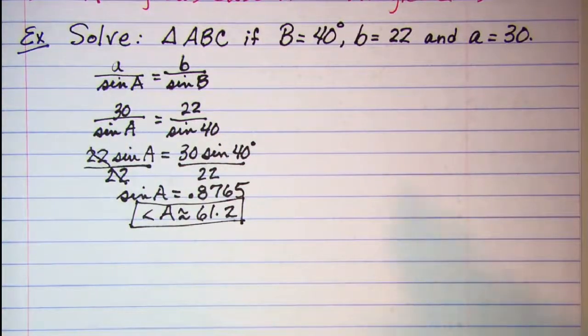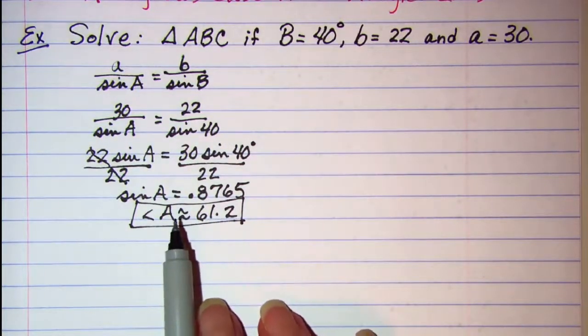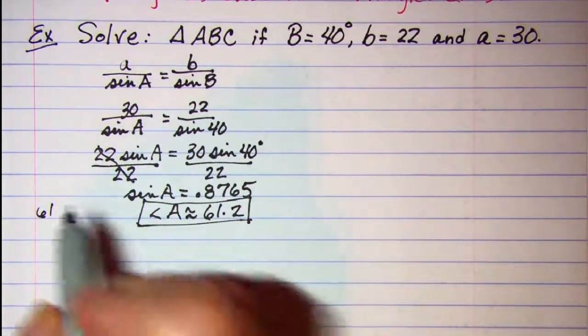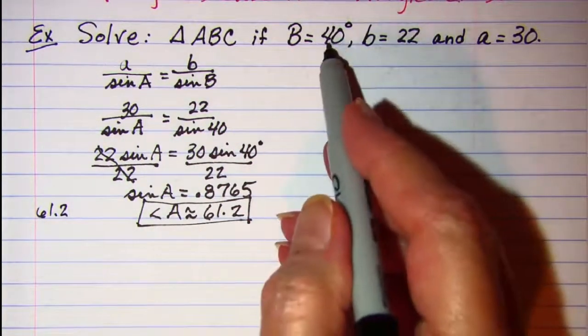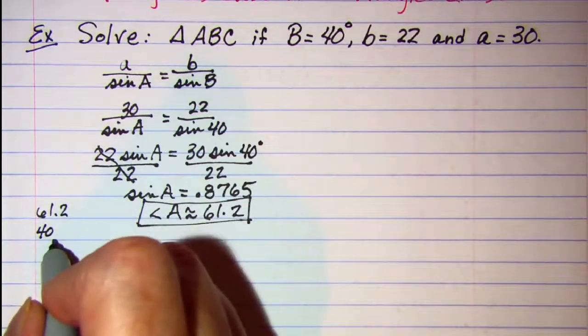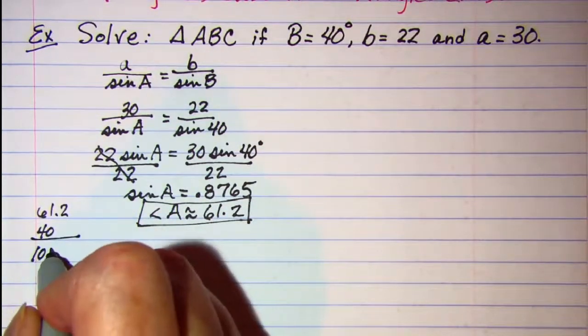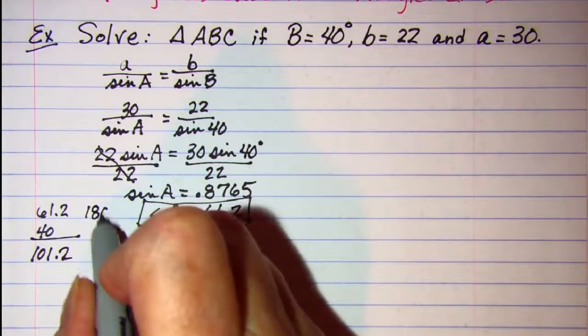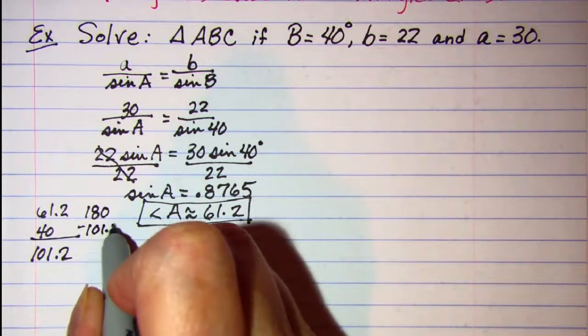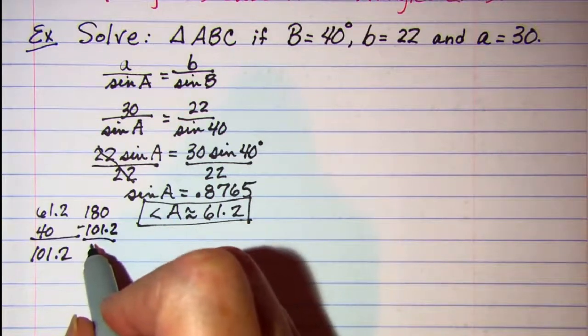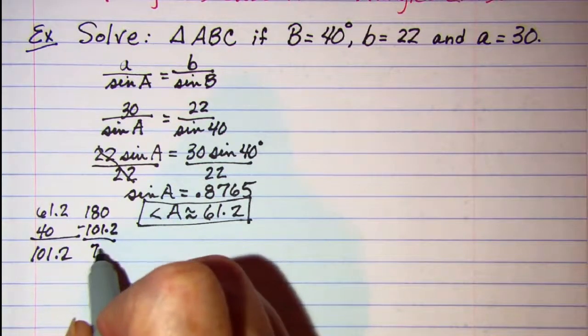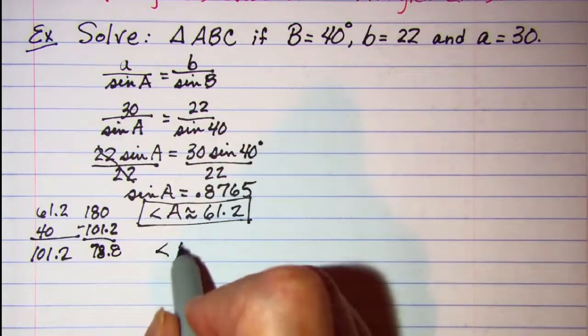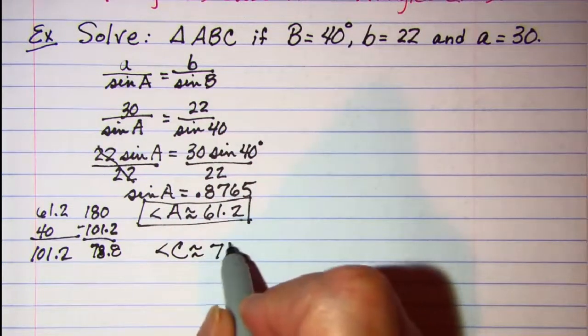Now we can find our third angle. We know that angle B is 40, so we'll add 61.2 and 40 and we get 101.2, and then subtract 180 minus 101.2, and we have our third angle will be 78.8, so angle C is about 78.8.